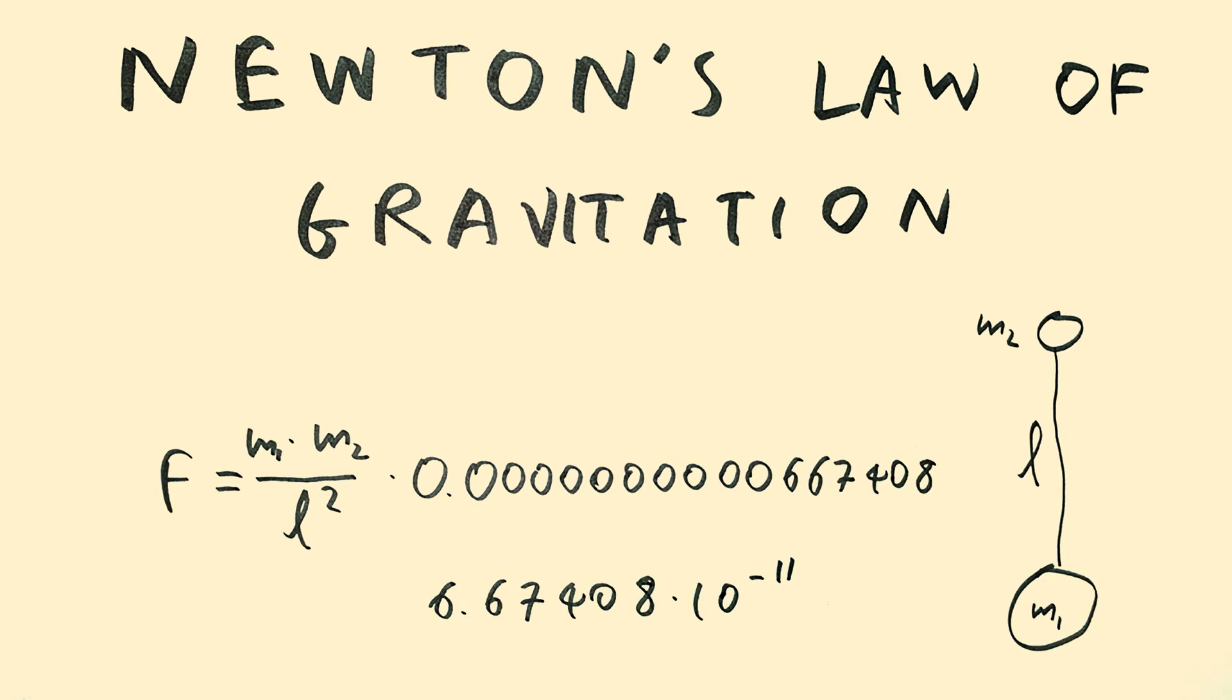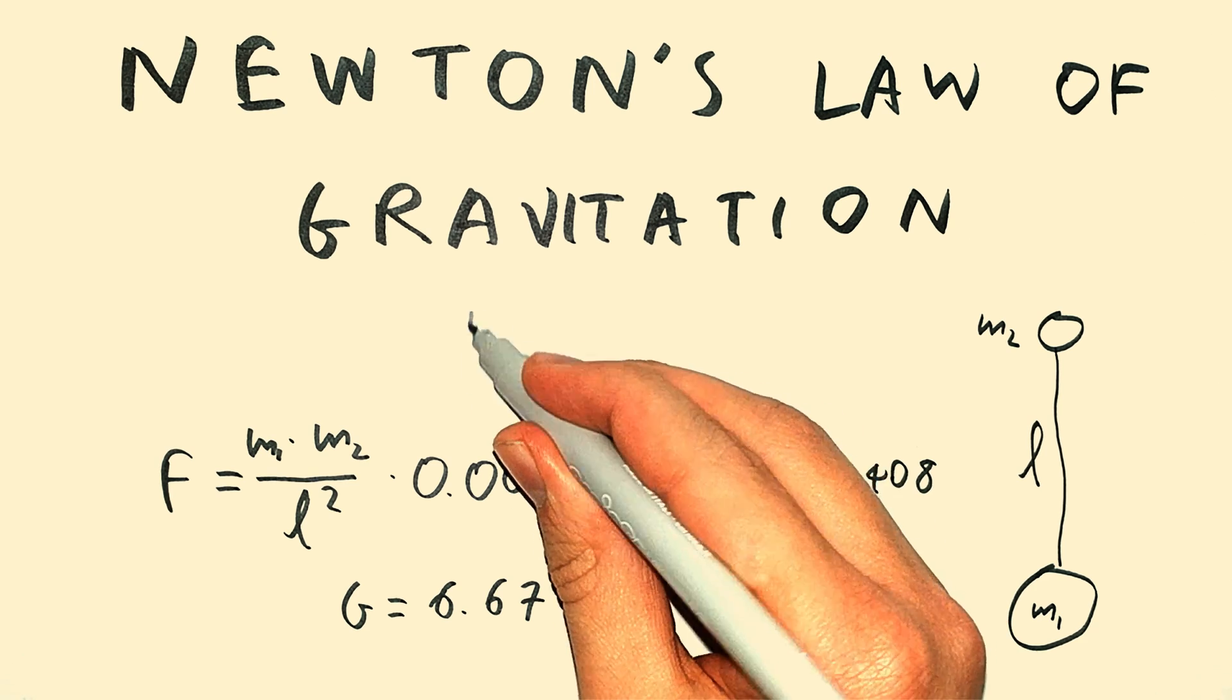Or this for short. This is the famous gravitational constant, and this is why it was introduced into physics, to calculate the gravitational attraction, back in 1687.